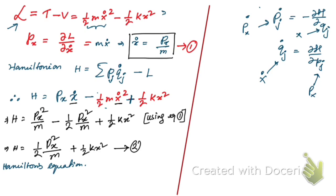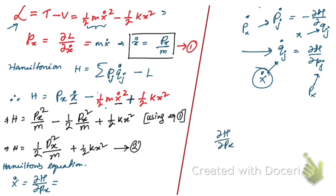Taking the first equation: x-dot equals del H by del px. Differentiating H with respect to px — only the px squared term involves px; the potential energy term gives zero. So differentiating half px squared over m gives two px over 2m, and the two cancels, giving x-dot equals px by m. This is equation number three.